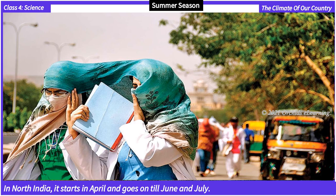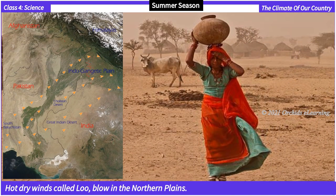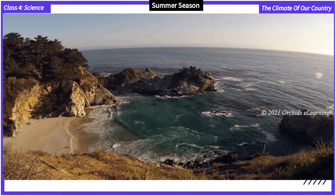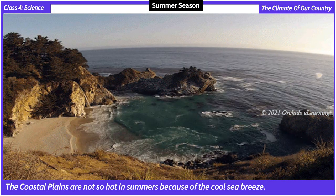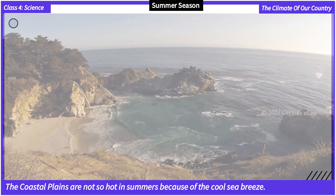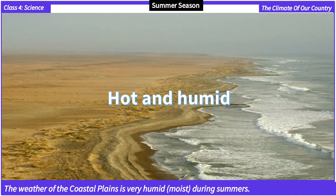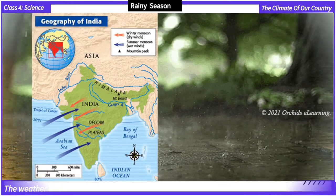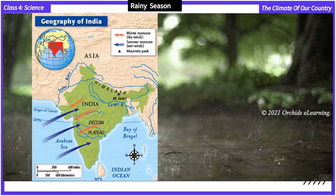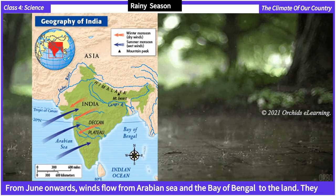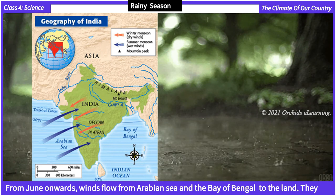In North India, hot dry winds called Loo blow in the northern plains. The coastal plains are not so hot in summers because of the cool sea breeze. The weather of the coastal plains is very humid and moist during summers.